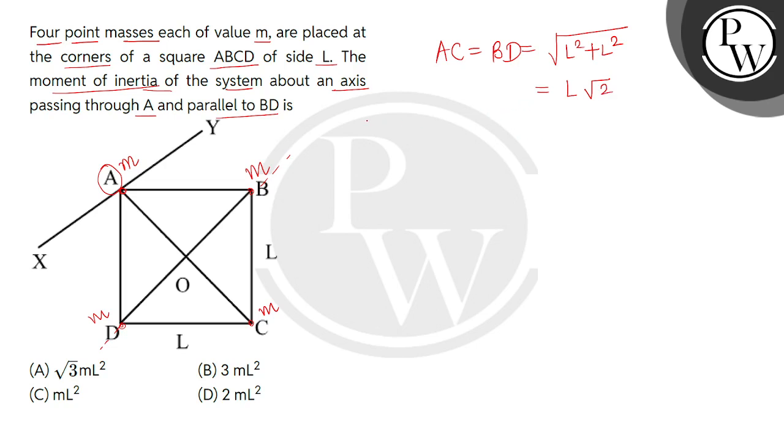Now we will find half of each diagonal, that is AO, OC, BO and OD. All these values will be the same, so this is L square root of 2 divided by 2, so the answer comes to L divided by square root 2.